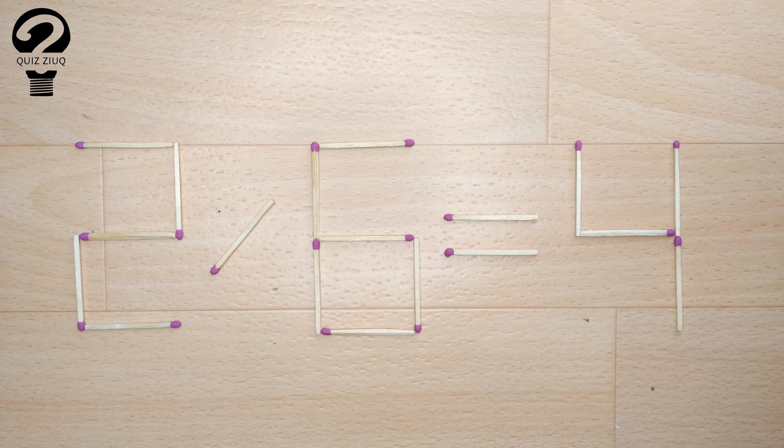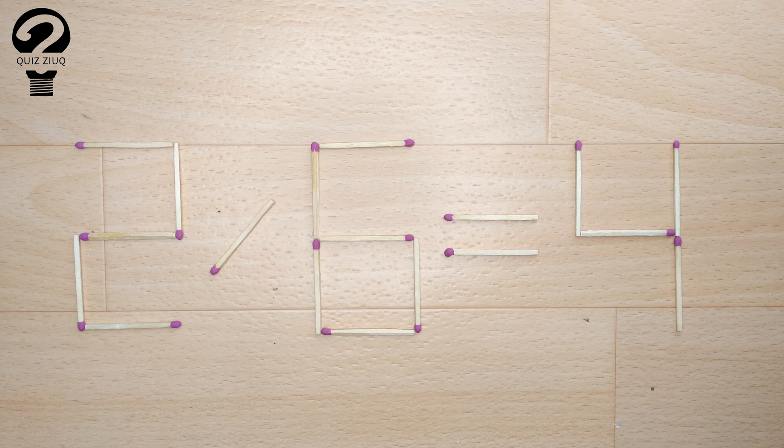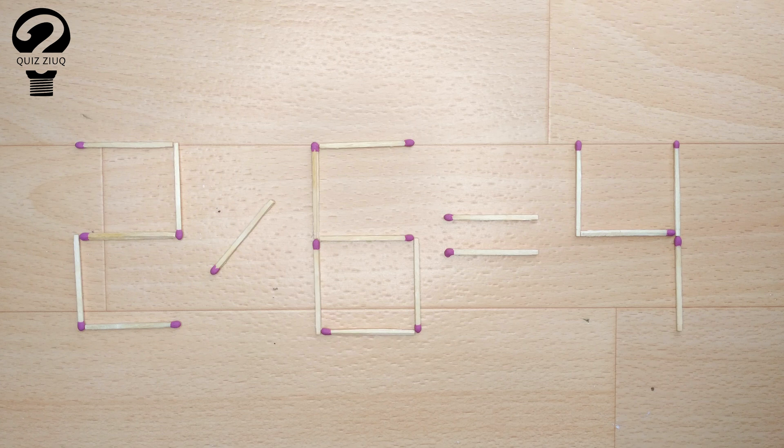Here's the next puzzle. We have this equation, 2 divided by 6 equals 4. Our equation is incorrect and we need to move two matches to make our equation correct.